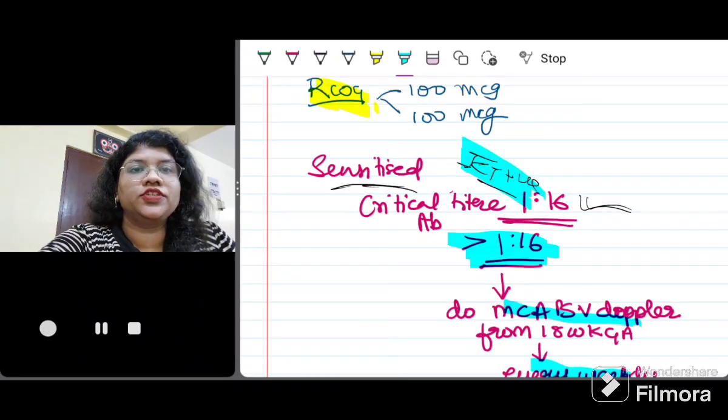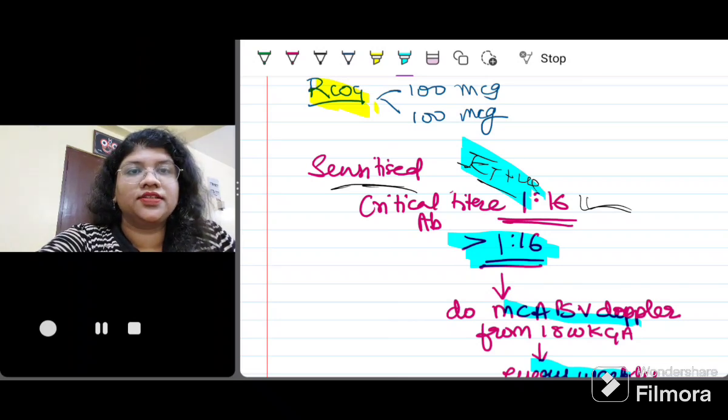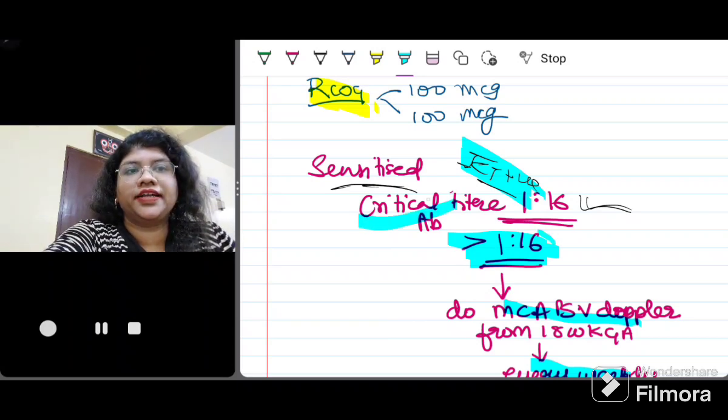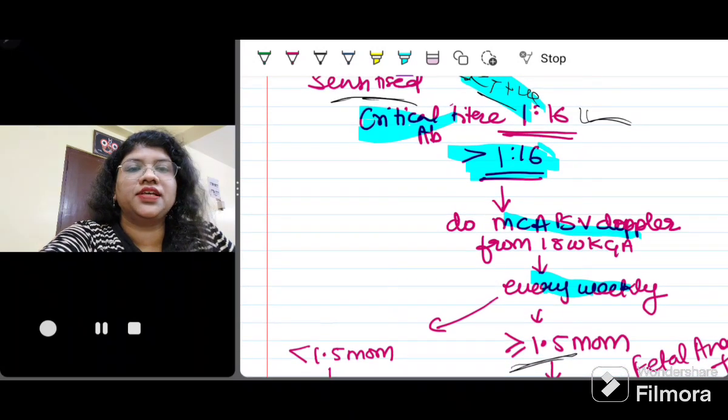Also remember that if ICT is positive, anti-D has no role in already sensitized female. Let's move to the next scenario in which if the female has ICT positive, now you have to look for the titer. The lab report will give you a titer, and if it is more than the critical titer, that is more than 1:16, you have to do a MCA-PSV doppler.